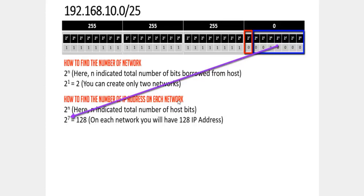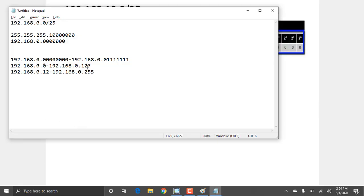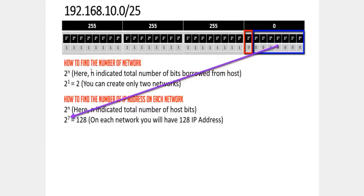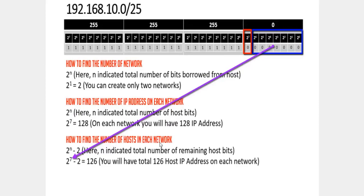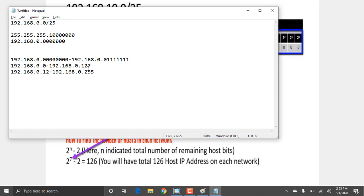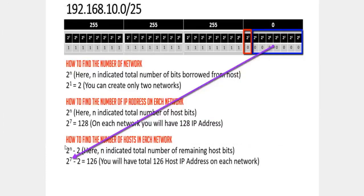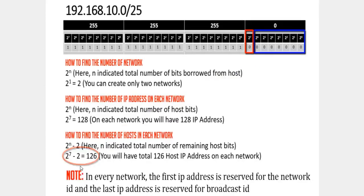To find the number of IP addresses in each network, the formula is 2 to the power of the number of host bits. In every network, the first IP address is reserved for the network ID and the last IP address is reserved for the broadcast ID. So the number of valid hosts is 2 power (host bits) minus 2.